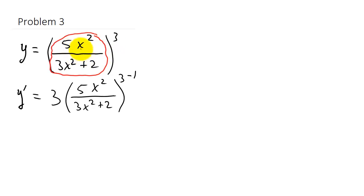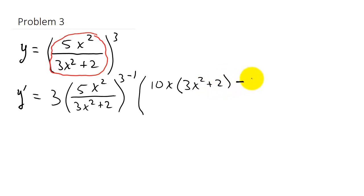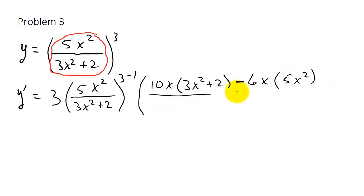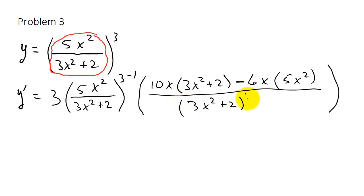The quotient rule gives us: the derivative of the numerator — which is 10x — times the denominator 3x squared plus 2, minus the derivative of the denominator, which is 6x, times the numerator 5x squared. The derivative of the constant 2 is 0. All of that is over the denominator squared. Now let's see if we can simplify this a little bit.